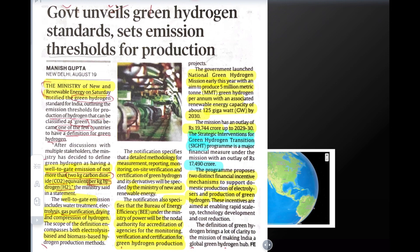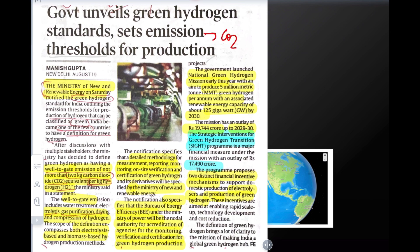In the first article: Government unveils Green Hydrogen Standards on Emissions for Production. The government has set standards for when you are creating Green Hydrogen, how much carbon emissions should be — we are talking about emissions of CO2.